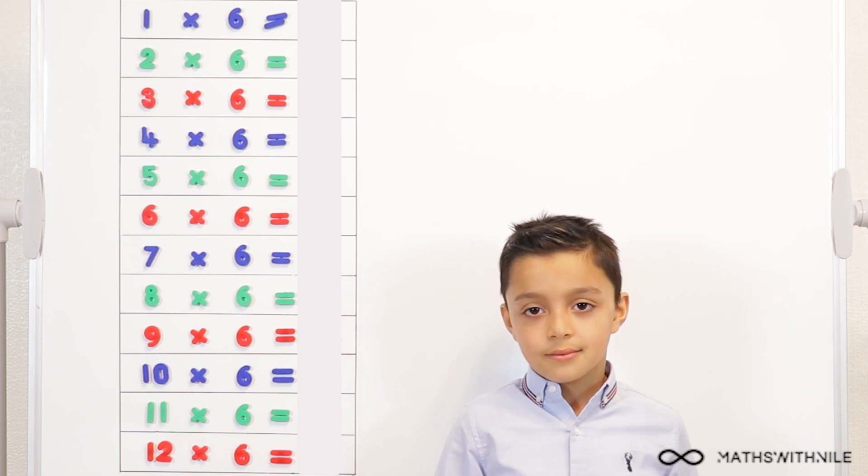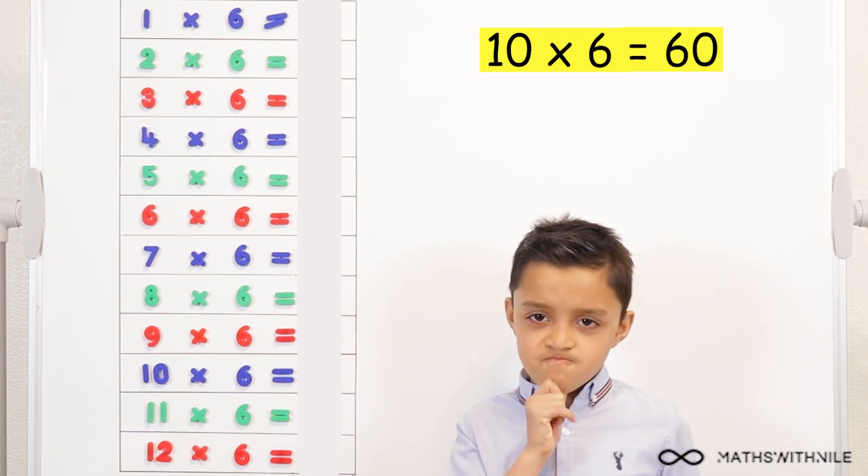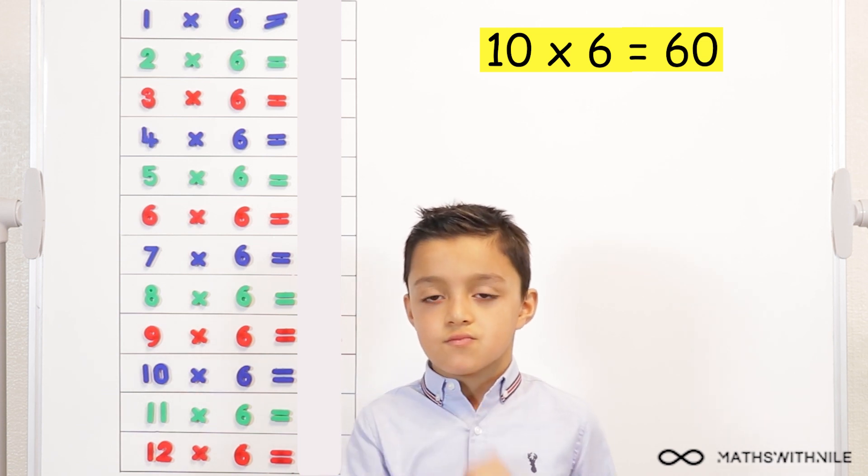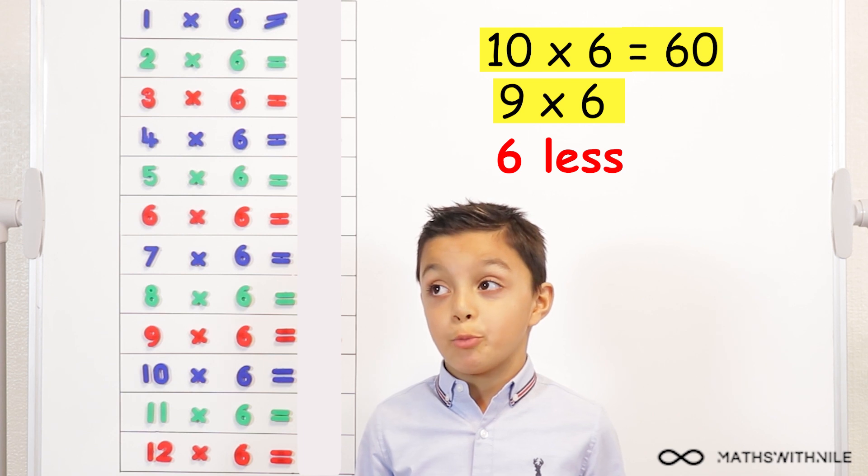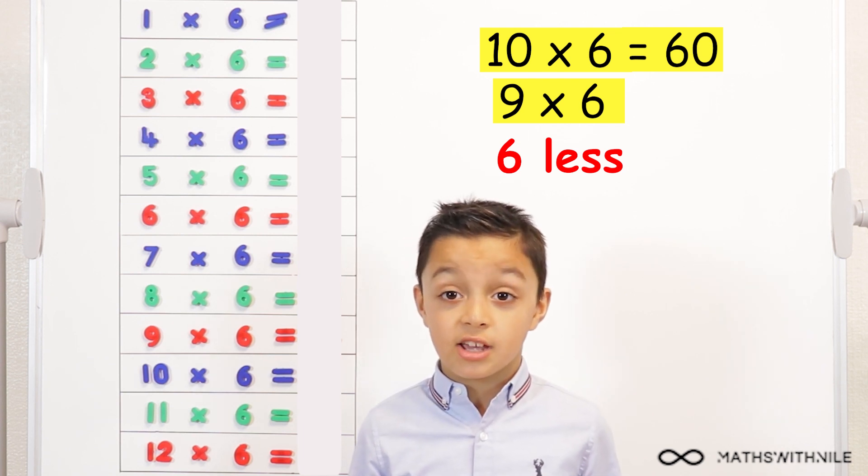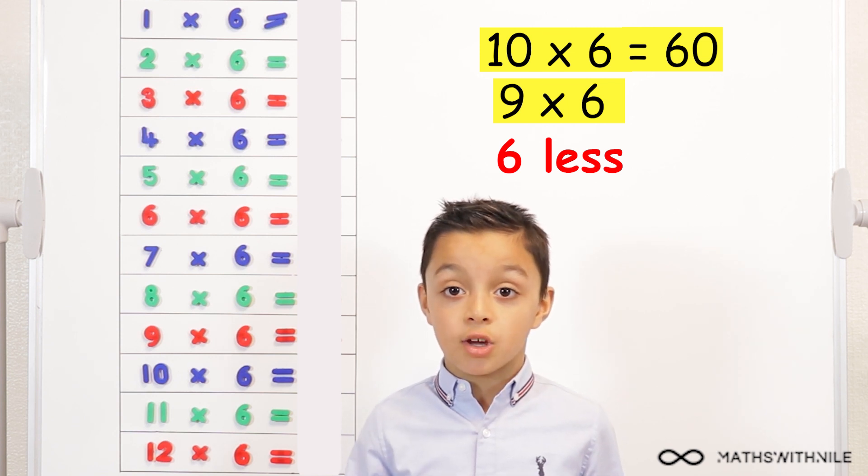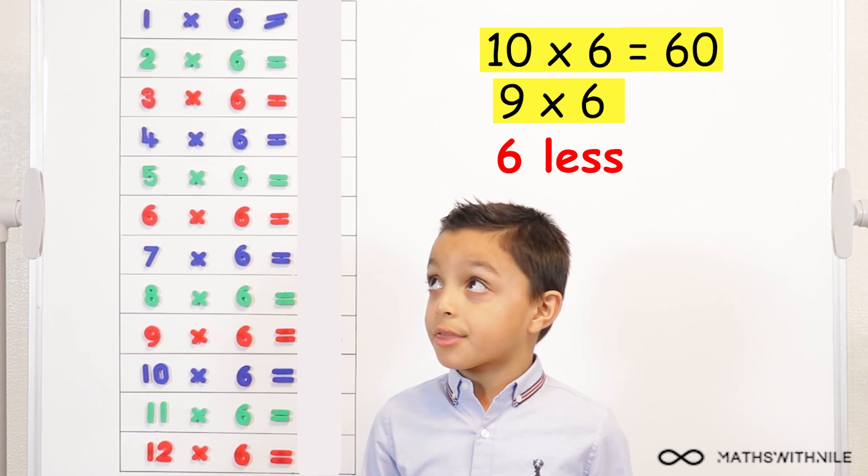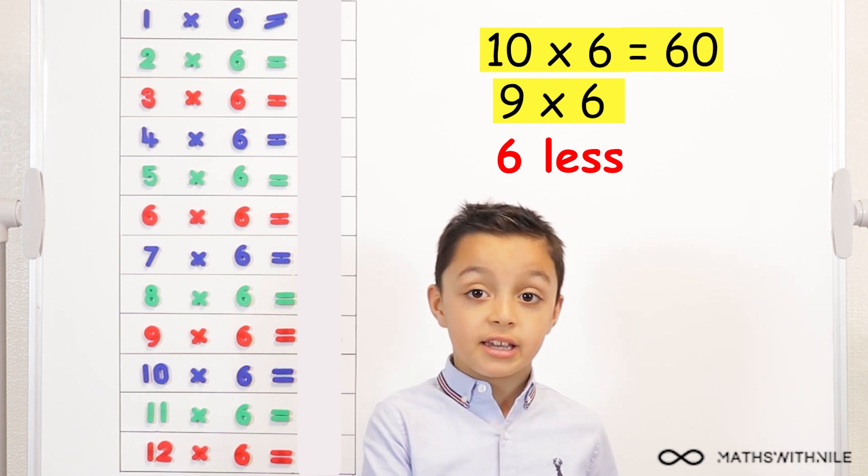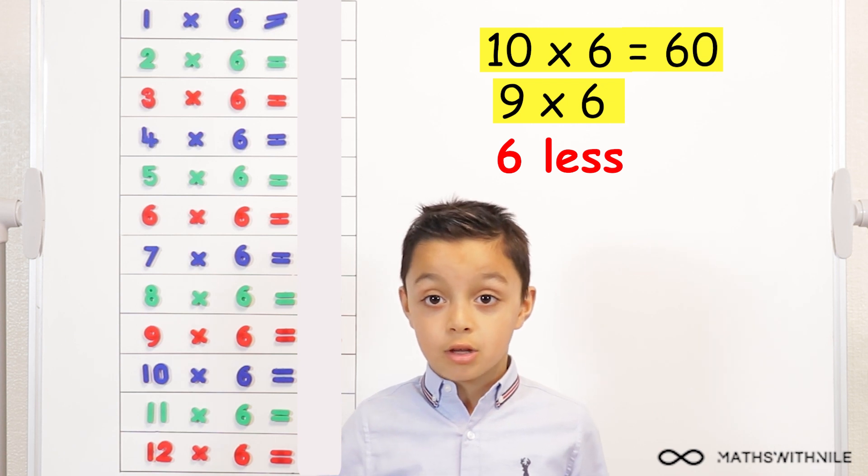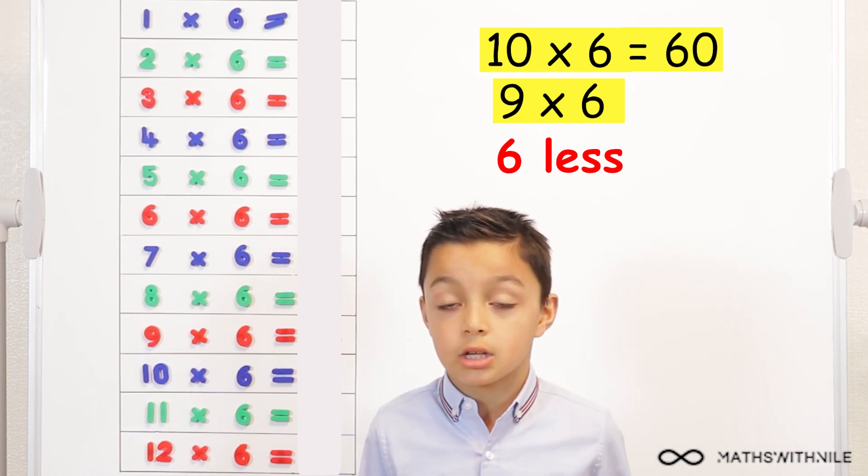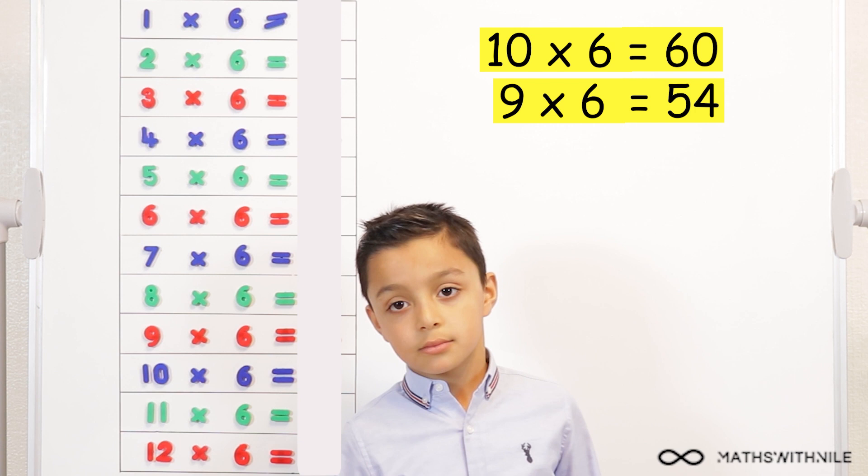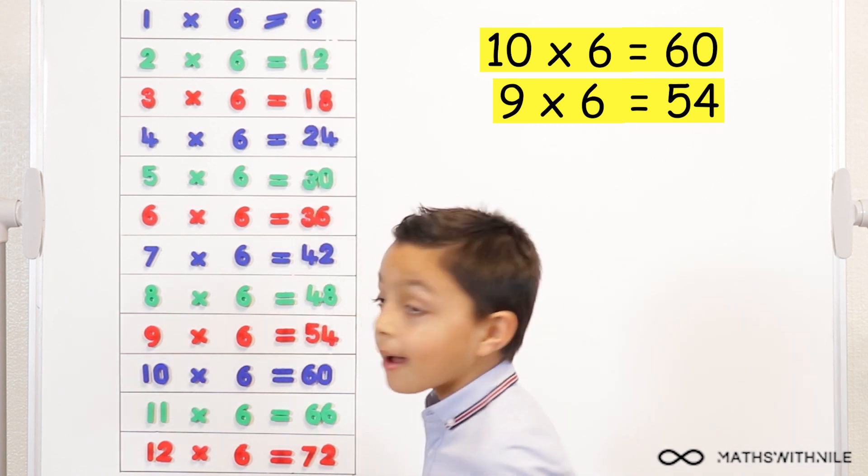Don't look at the board. If you know that ten times six is sixty, what will nine times six be, and how will you work it out? Six less. Six less than sixty. Um, we haven't done a video about this, but number bonds to ten, like what numbers, what two numbers will make ten. Um, six and four make ten, so if we take away six, it will equal four from sixty. If you get what I'm saying. So, what will the answer be? Six. Sixty, um, fifty-four. Fifty-four. And that is correct. Yeah. That's correct.